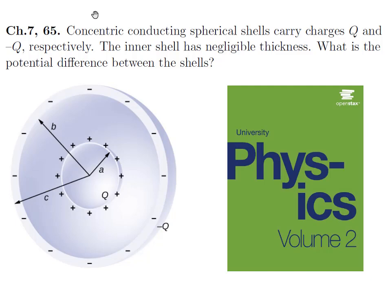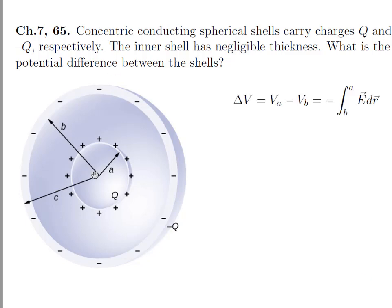The inner shell has negligible thickness. What is the potential difference between the shells? Here, a is the radius of the inner shell, b is the radius of the outer shell.